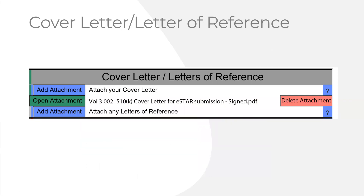The next section is the cover letter and references. We have a cover letter template that meets all the requirements — you fill in the Word document, convert it to PDF, and sign it. You click the blue 'add attachment' button, search for the document, and attach it. If you need to make a change, you delete the attachment and add the revised one. Sometimes you'll also have letters of reference — for example, a reference to a MAF file, a device master file, or another submission your company has.